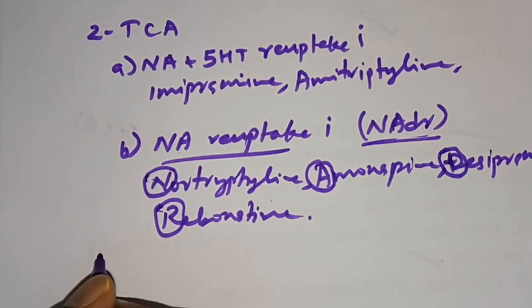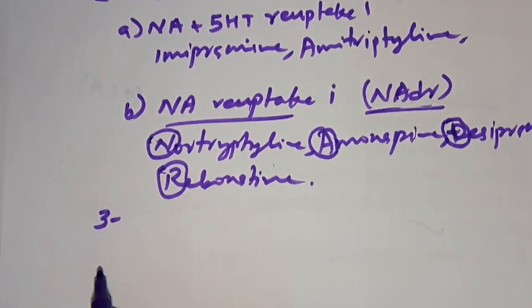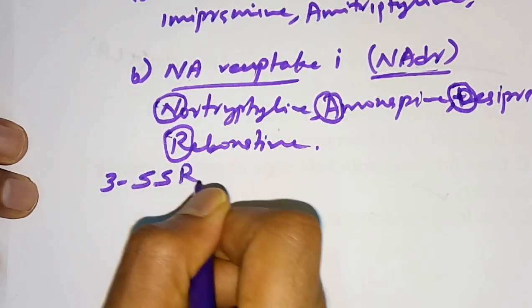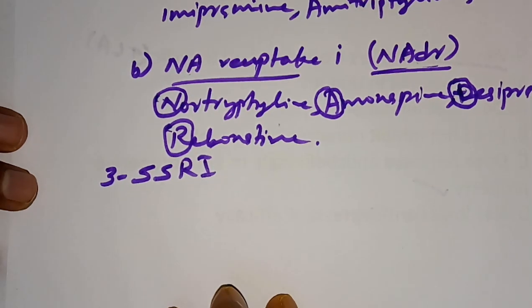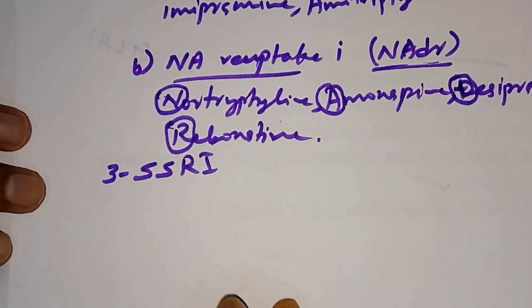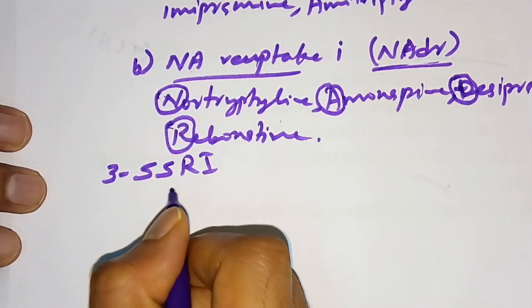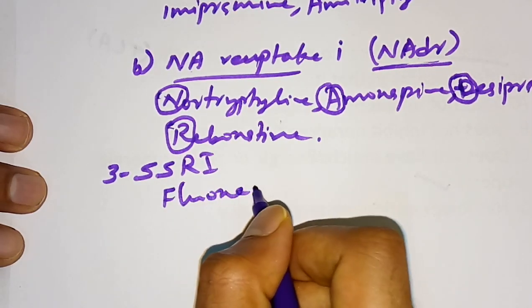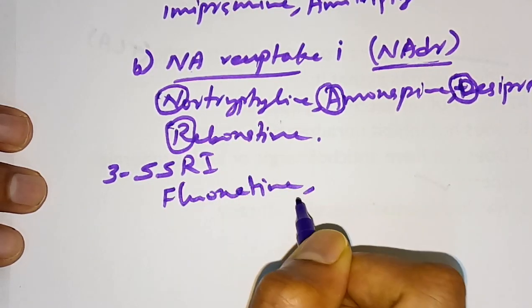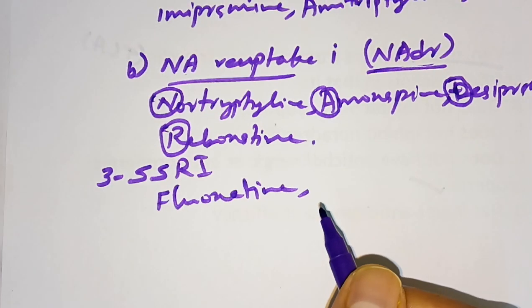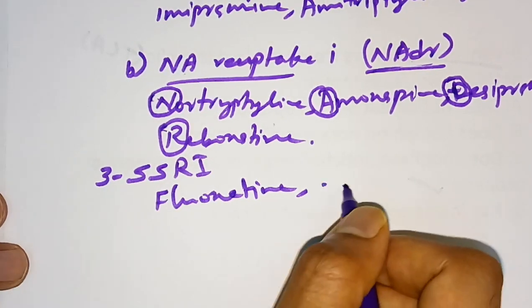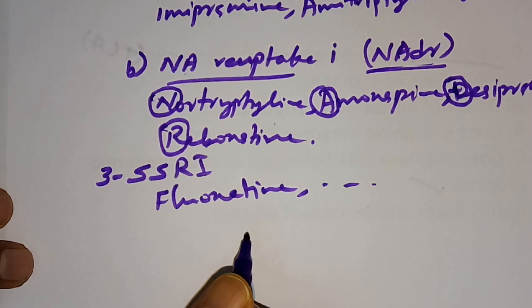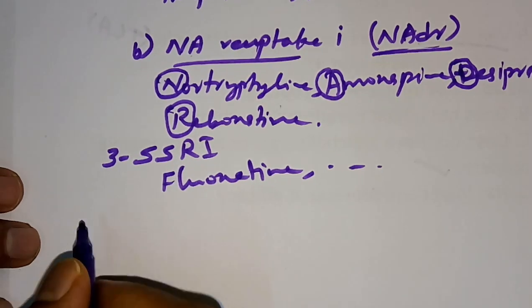The third class is selective serotonin reuptake inhibitors (SSRI). Examples are Fluoxetine, Fluvoxamine, Sertraline, Citalopram, Escitalopram, and Paroxetine — all coming under the SSRI category.